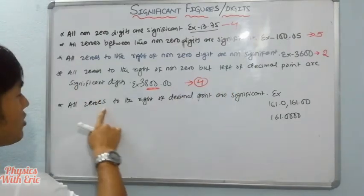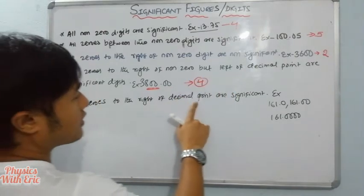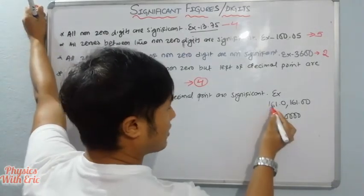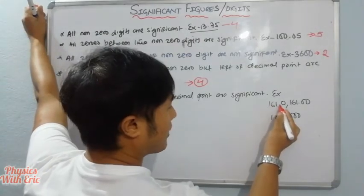Rule four: all zeros to the right of a decimal point are significant.